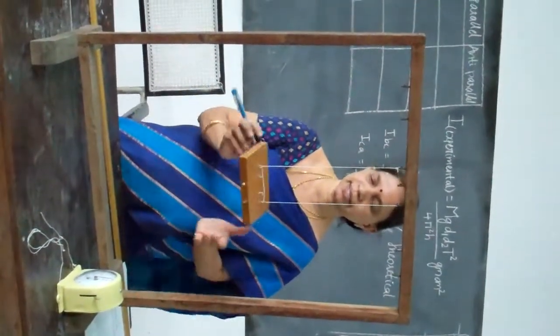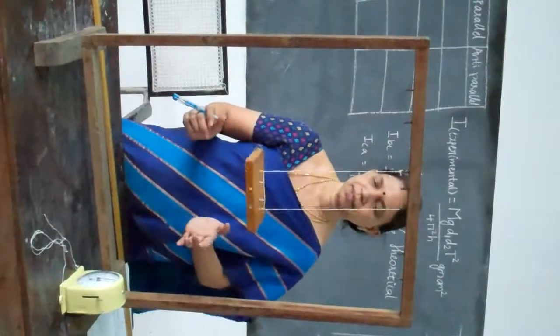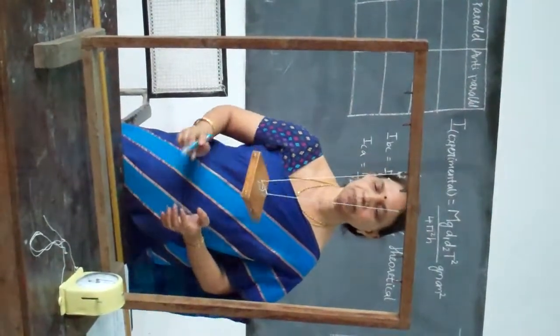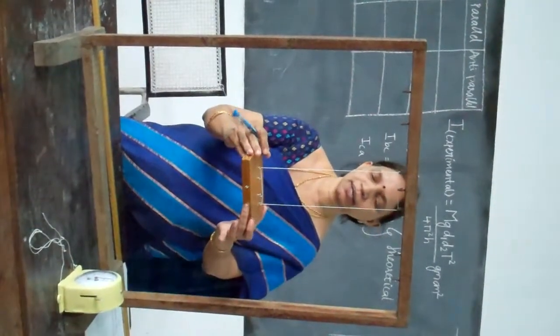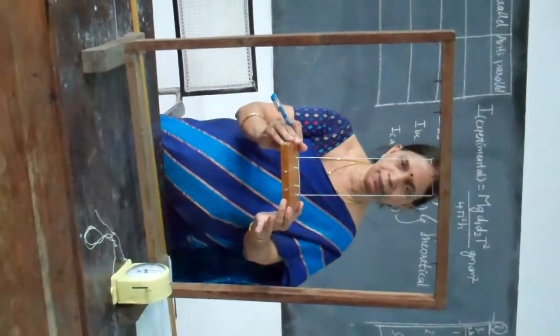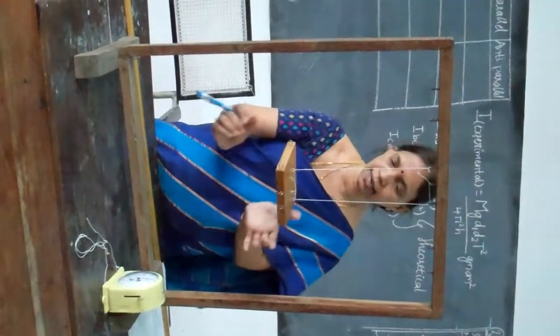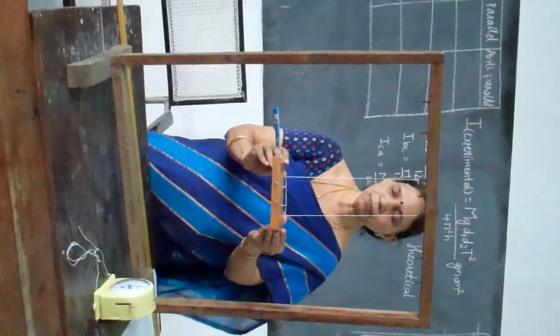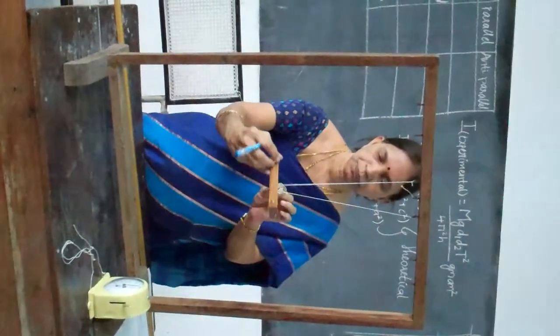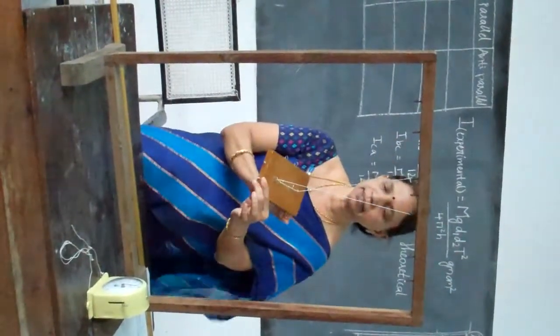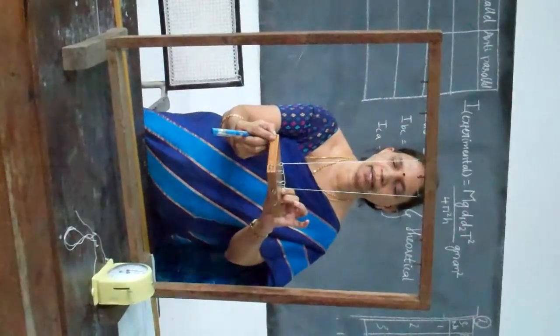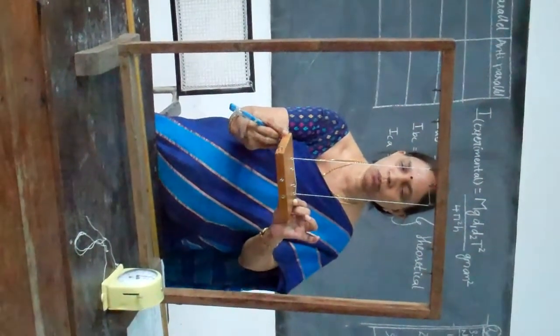Now we have to hold it like this. This is the oscillation. And this is your mean position or the equilibrium position. From here, you will turn to one side and the other side. Mean position, extreme, mean to the other extreme and come back. This is considered to be one oscillation.